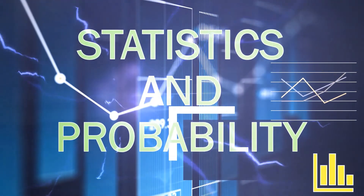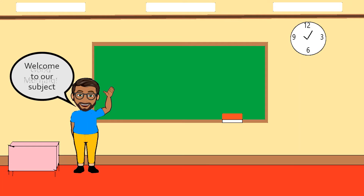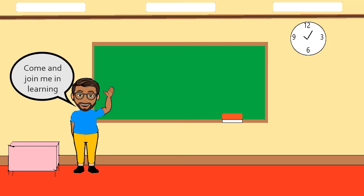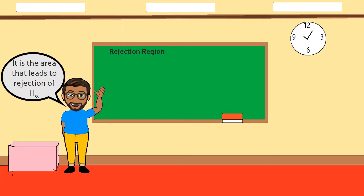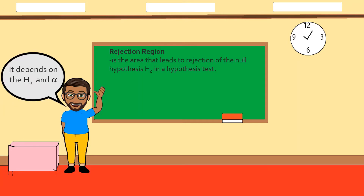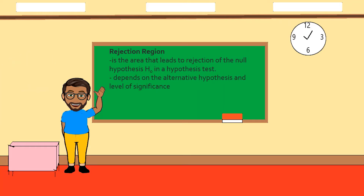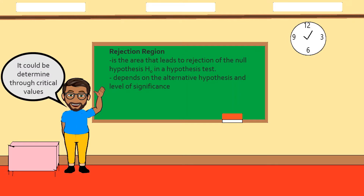Welcome to Statistics and Probability. Today we will discuss the rejection region. The rejection region is the area that leads to the rejection of the null hypothesis. It depends on the alternative hypothesis and the level of significance, and it should be determined through critical values.